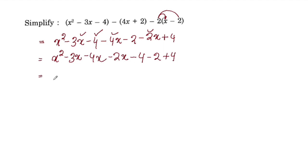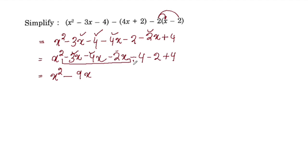This equals x². For the x terms, adding all negatives: 3 plus 4 is 7, plus 2 is 9, so -9x. For constants: -4 plus 4 cancels, leaving -2. The simplified answer is x² - 9x - 2.